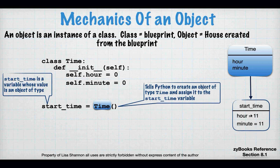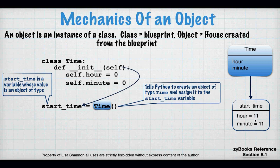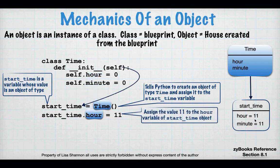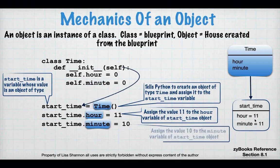So `self` is going to be `start_time`. `start_time.hour = 11` means I'm assigning the value 11 to the hour variable of the `start_time` object. I've created an object called `start_time` of type `time`, and now I'm setting the hour instance variable to 11. Then I'm going to assign 10 to the instance variable `minute`. What I have is an object created from the class that has state information.